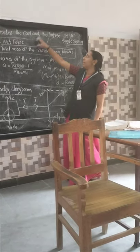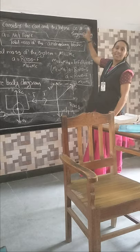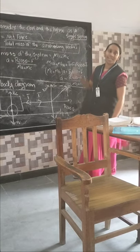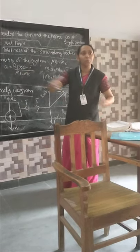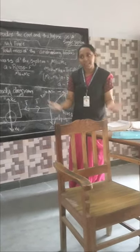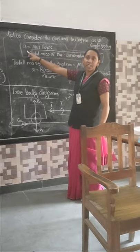Now let us consider the cart and horse as a single system. What is the acceleration of that? Actually both are related in a single system and I have already talked about it. Both are moving in the same way. So we should consider both in a single system. What is the acceleration expression?